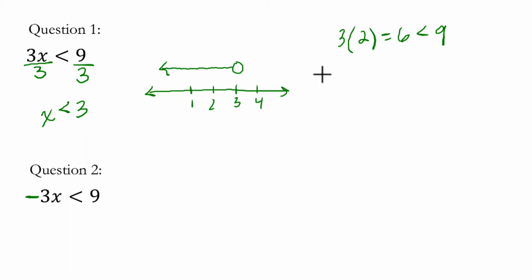If we choose 1, 3 times 1 is 3, and that's also less than 9. So any x value we pick where x is less than 3, this inequality will be true.